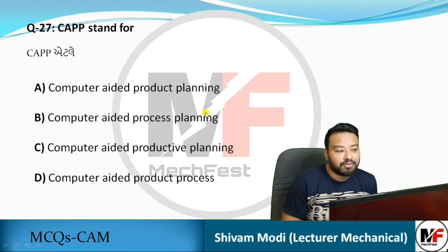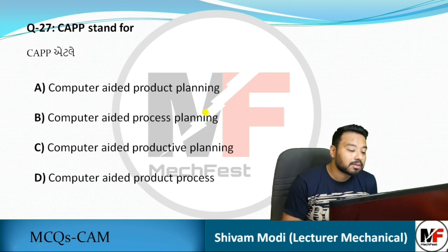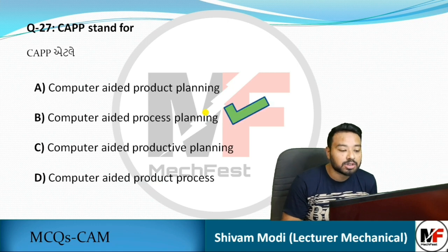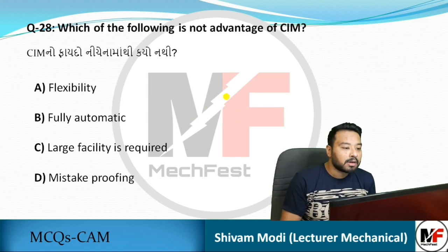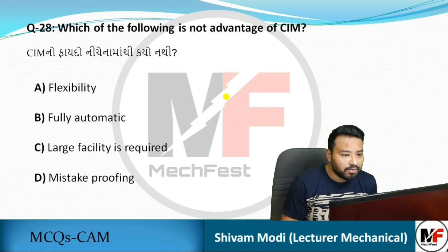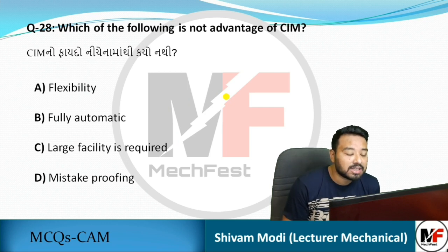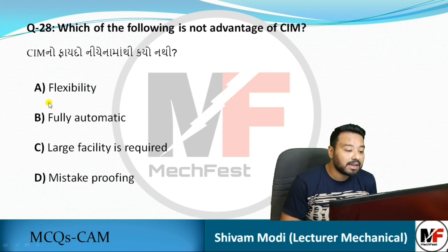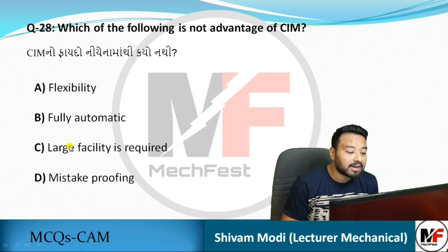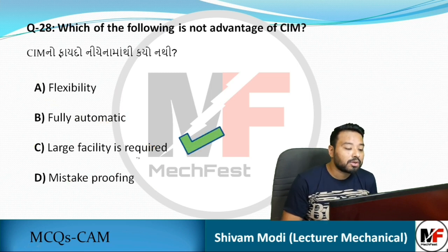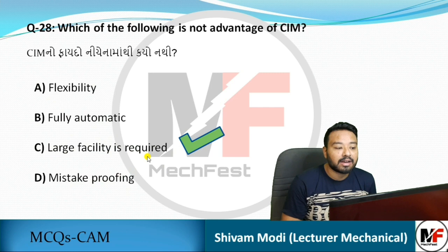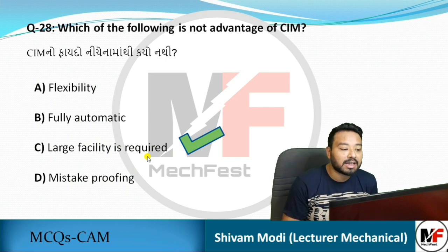CAPP stands for Computer Added Process Planning, as discussed earlier. Next question: which of the following is NOT an advantage of CIM? Options include flexibility, fully automatic, large facilities required, and mistake proofing. The answer is 'large facilities required' — this is a disadvantage, not an advantage of CIM.